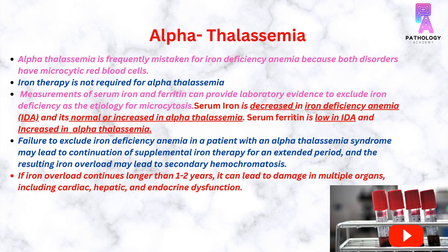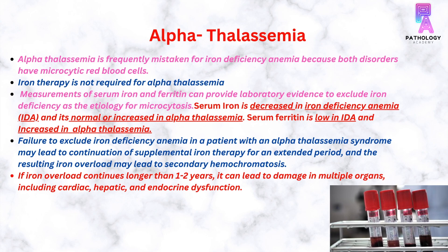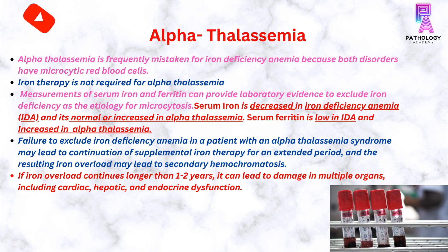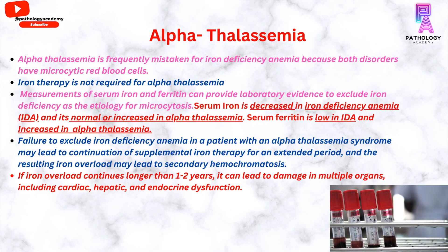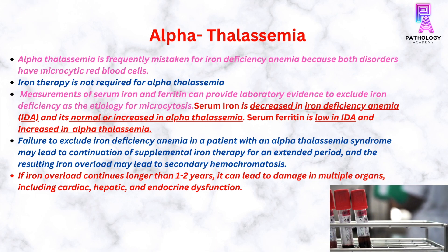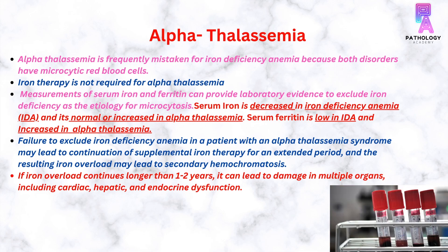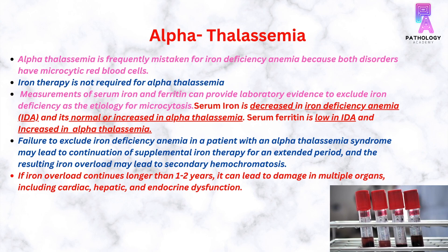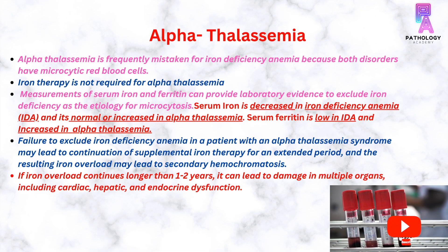Alpha thalassemia is frequently mistaken for iron deficiency anemia because both disorders have microcytic hypochromic RBCs. In patients with alpha thalassemia, iron therapy is not required. Measurements of serum iron and ferritin can provide laboratory evidence to exclude iron deficiency as the etiology of microcytosis. Serum iron is decreased in iron deficiency anemia but is normal or increased in alpha thalassemia. Similarly, serum ferritin is low in iron deficiency anemia but is increased in alpha thalassemia. Failure to exclude iron deficiency anemia may lead to continuation of supplemental iron therapy, which can cause iron overload and secondary hemochromatosis.